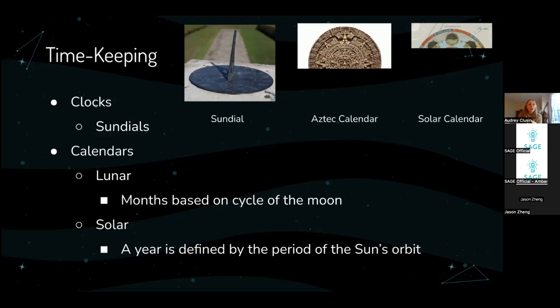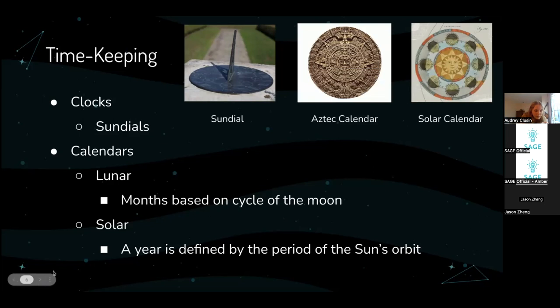Calendars also made use of the movement of the sun, moon, and stars throughout the year. Over here we have an example of a calendar — I think it's a solar calendar. It has all the different positions of the sun corresponding to different months — day, month, year. Here's also another example of a solar calendar, which tells you what time of year it is based on how the sun moves.